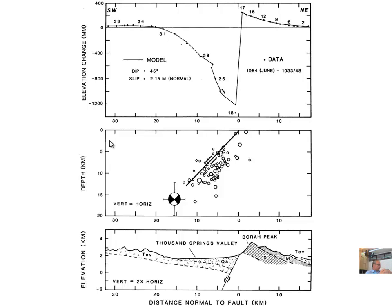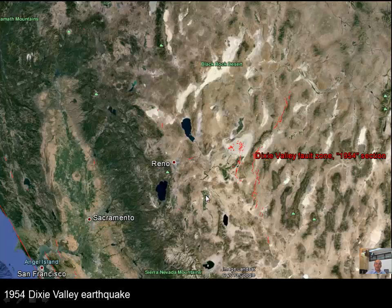Sometimes it's difficult to identify the hypocenter location because you can have multiple moment release phases, making it ambiguous where exactly the main shock was — though by definition the hypocenter is the initiation point. Also, if you locate the main shock by a regional network and then afterwards deploy an aftershock network with more seismometers, you're locating events with different datasets unless you relocate the main shock with a better velocity model. Sometimes there can be a mismatch.